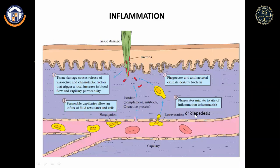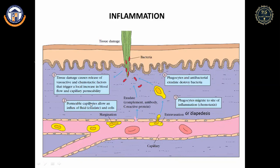In inflammation, when tissue is damaged and a wound is created, pathogens can enter. This causes redness, pain, heat generation, and swelling — the inflammatory responses. It causes vasodilation, meaning increased diameter of blood vessels. Tissue damage triggers release of vasoactive and chemotactic factors that cause blood capillaries to constrict and increase capillary permeability.